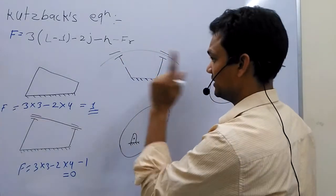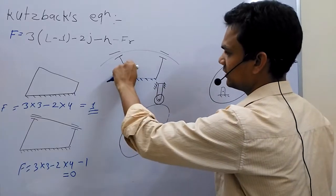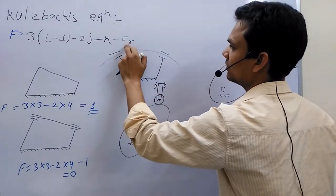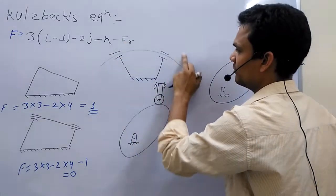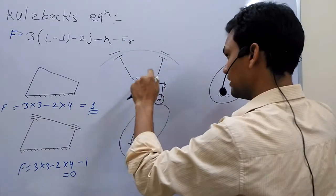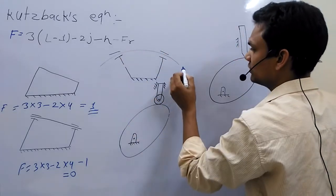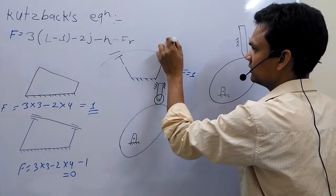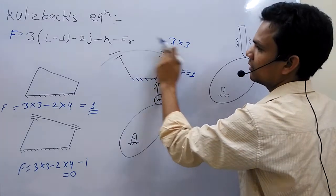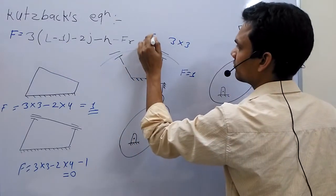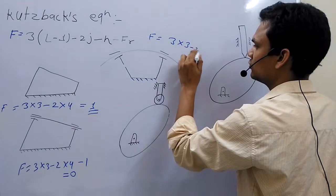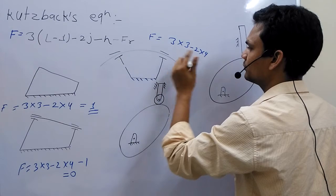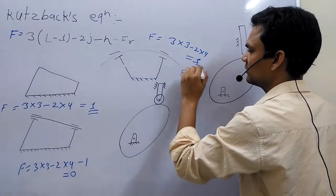Now I show in this case, if I rotate this link, this also rotates. Because in this I restrain it by fixing it. So the degree of freedom of this system will also be one. Because three into three, number of links, minus two into four. I do not consider this fixed link. So degree of freedom of this system is one.